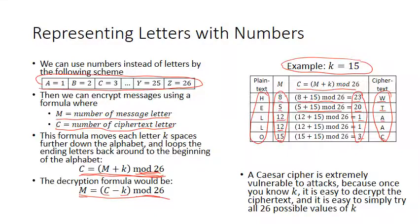That is how you use the Caesar cipher formula. Now, the Caesar cipher is the easiest crypto system to understand, and it's also the easiest one to break. Those newspaper puzzle columns used to have exactly a Caesar cipher to decrypt. Even one human without a computer can decrypt these messages without knowing what K is, because all you have to do is try all 26 possible values of K.